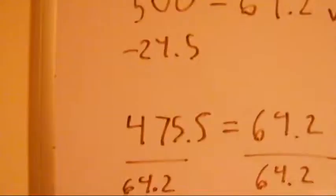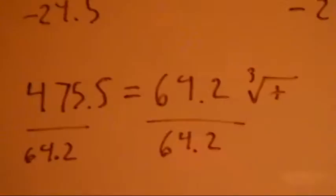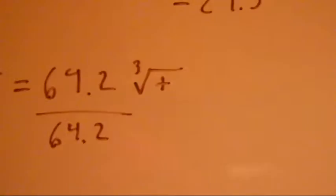Now first, obviously, we're going to subtract 24.5, which we have to do on both sides, which brings us to 475.5, which equals 64.2 times the cube root of t.